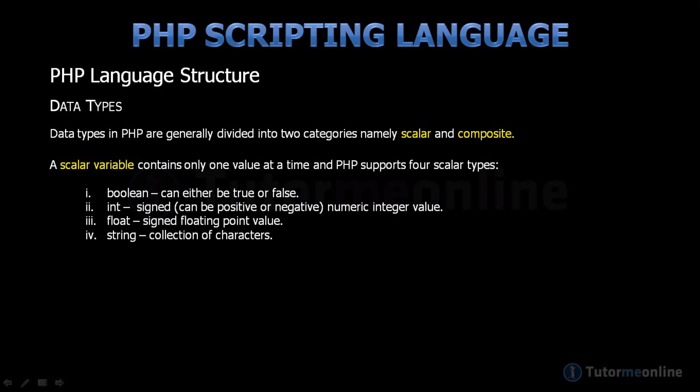A floating point value, which is a decimal number. These can also be signed or unsigned. And a string, which is a collection of characters.